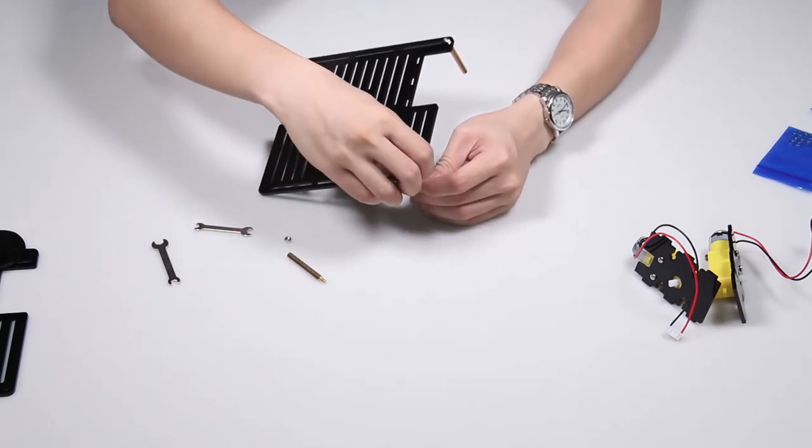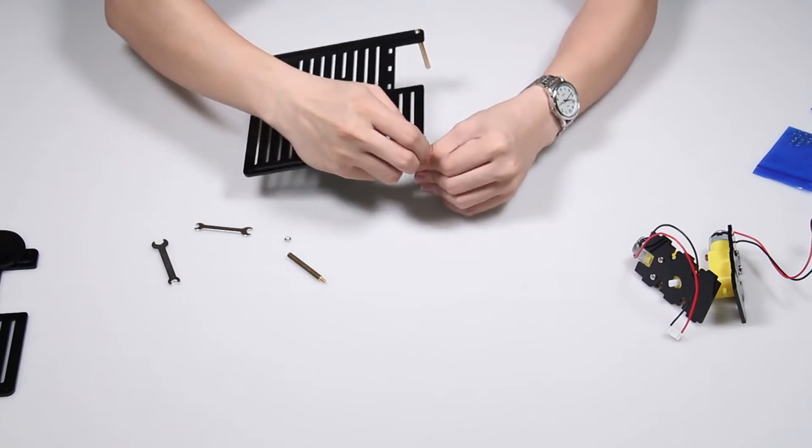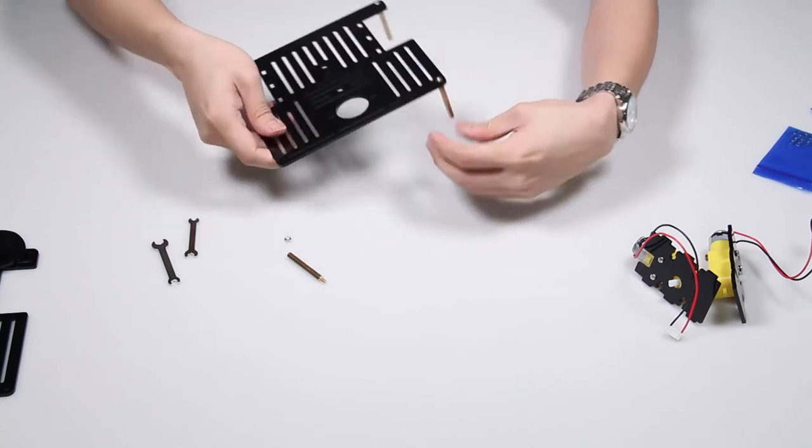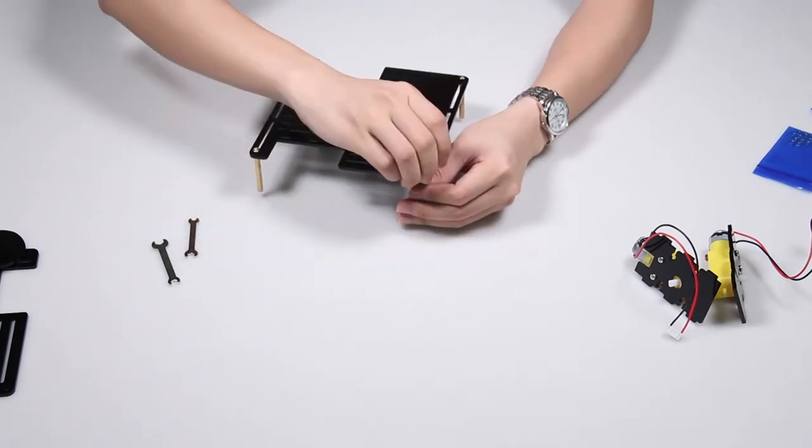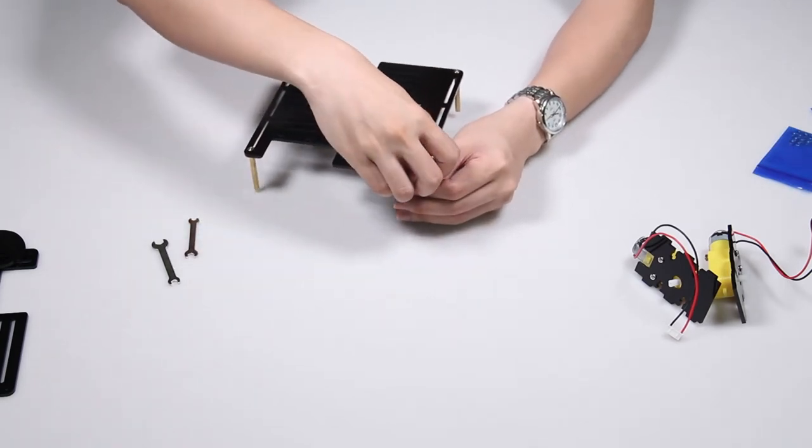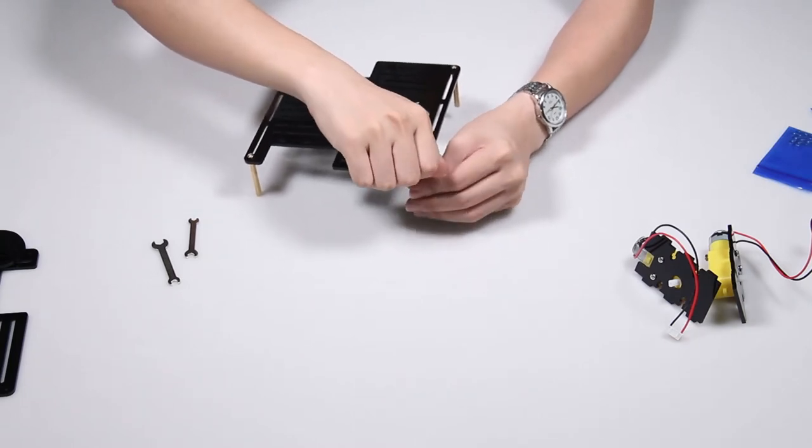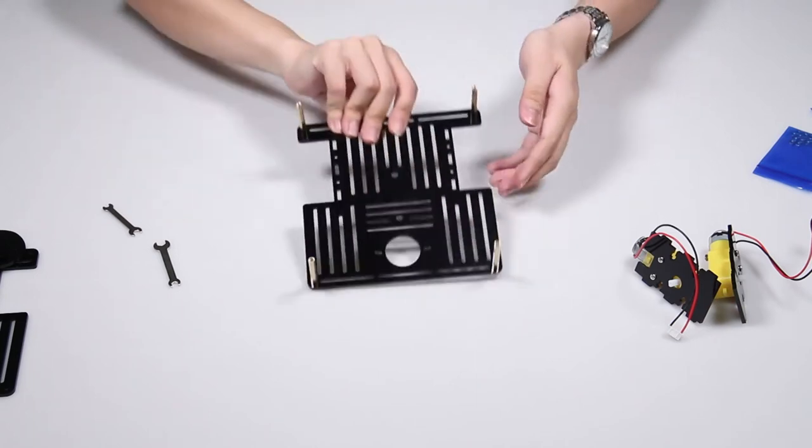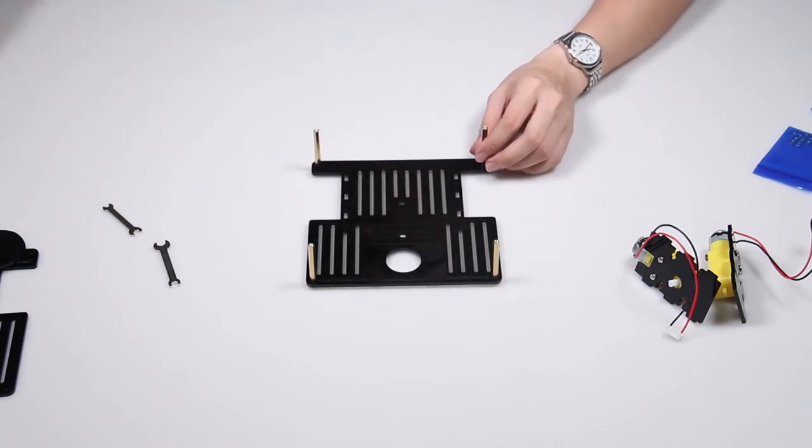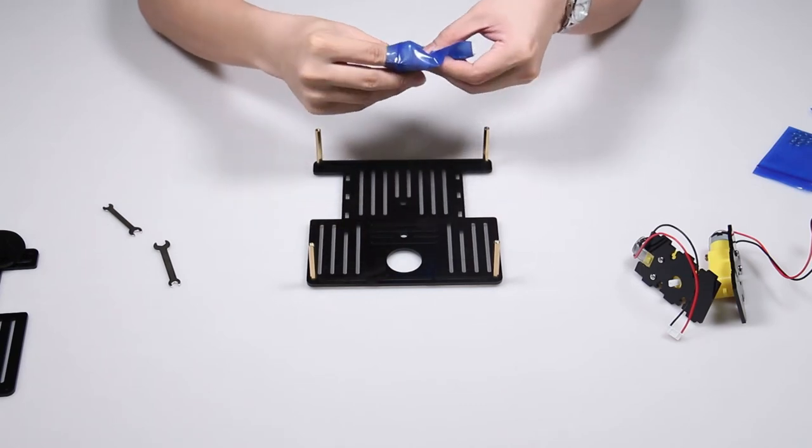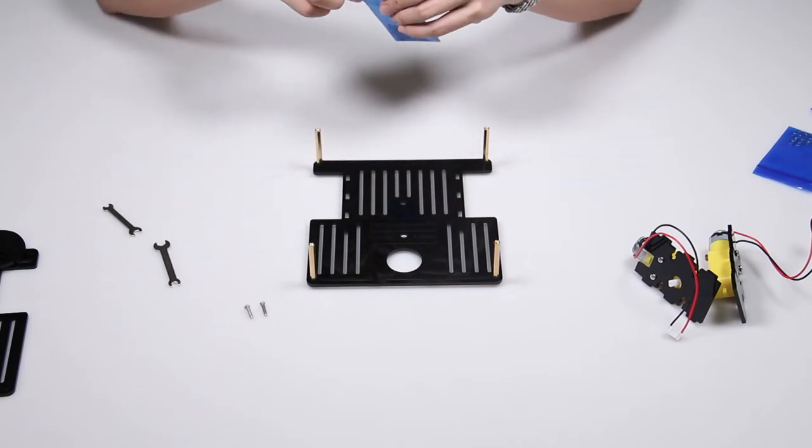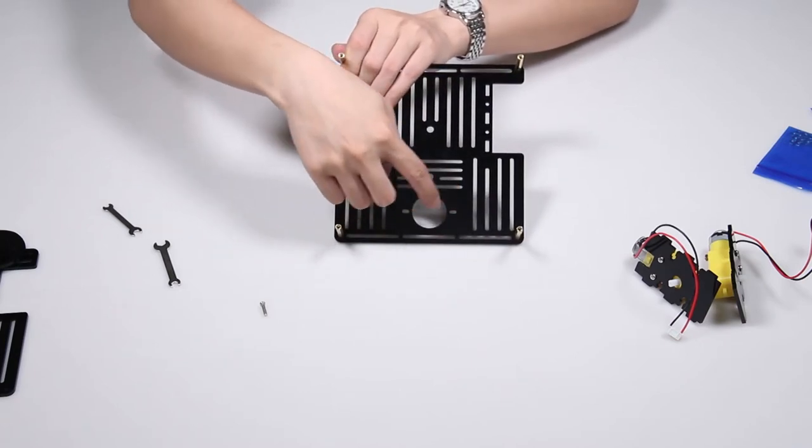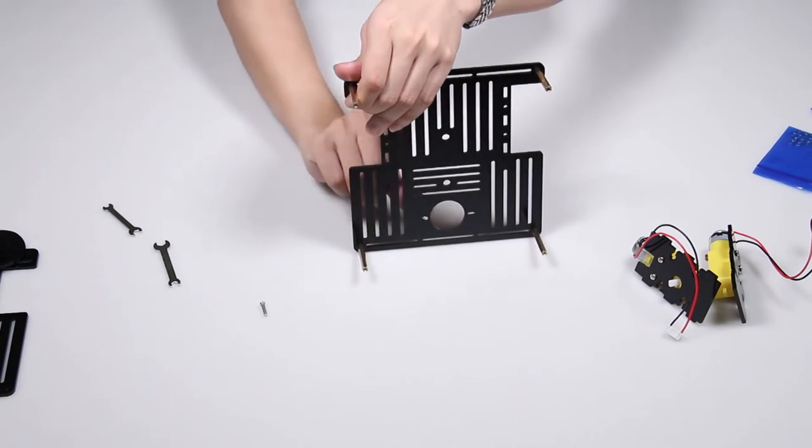Tighten it with the nut. You can also use a wrench. This is M3. Like this. And now take M3x12 screws, the long ones, mounted from the bottom into these holes along the round hole.